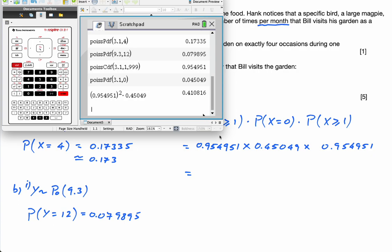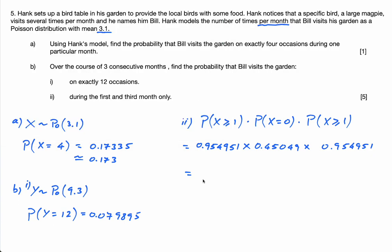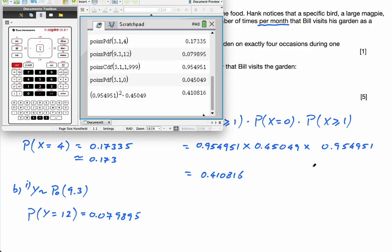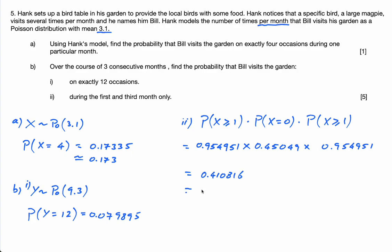And I get 0.410816. Three significant figures: 0.411. Okay, that's it. That's parts A and B.